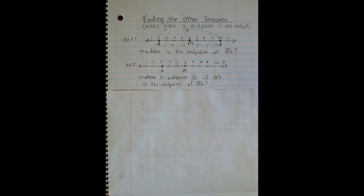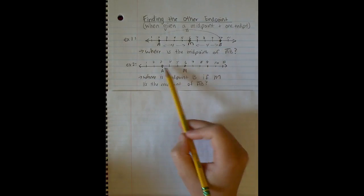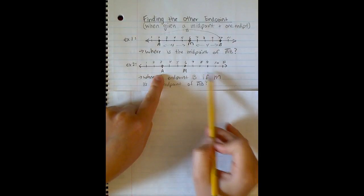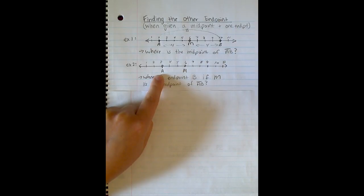I gave you the midpoint of segment AB right here at point M. So if this is the midpoint of a segment, where would that segment end? Well, since A is on the left side, I know that B has to be somewhere over here. And in order to find the exact location of that endpoint, I'm going to use the same concept that we did above, which is that the midpoint creates two smaller congruent segments.